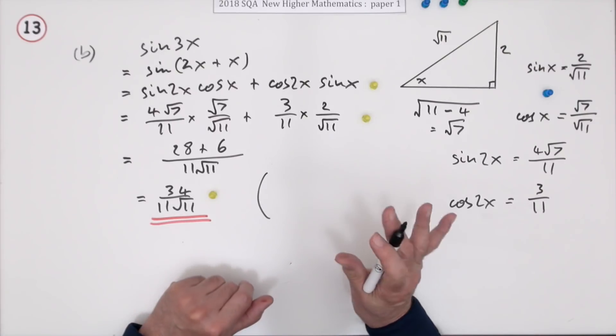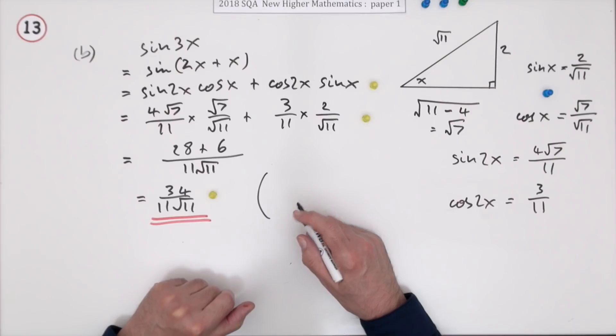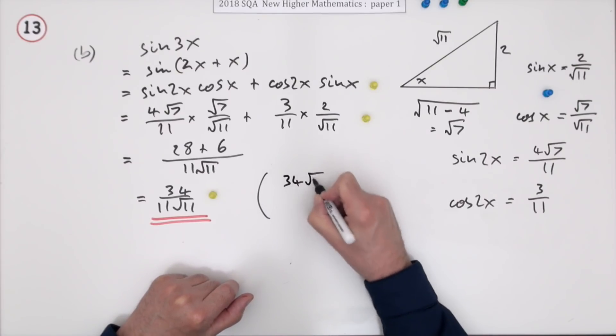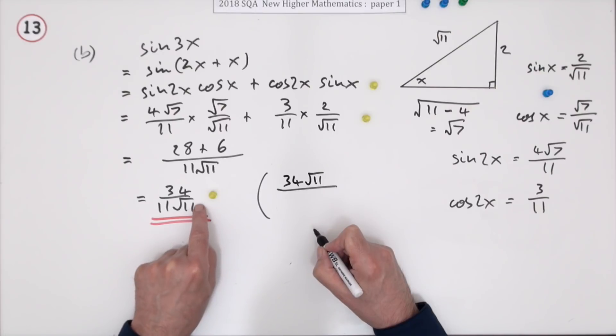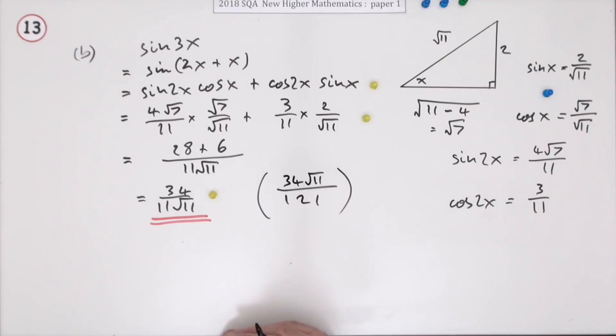However, if it annoyed you at all, you could always just multiply the top and the bottom by root 11. So the numerator becomes 34 root 11, and root 11 times root 11 would be 11, and 11/11s are 121. You could always write that, but you wouldn't get any extra marks in this case.